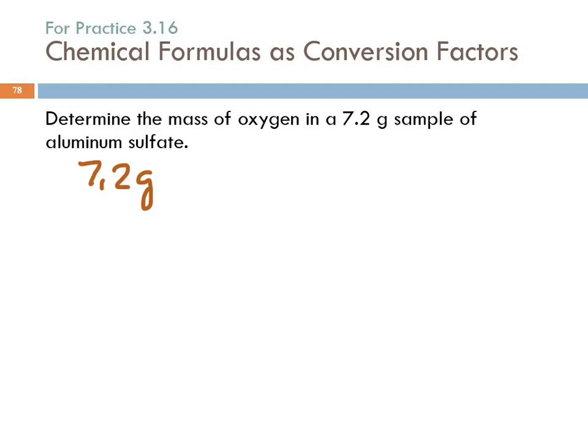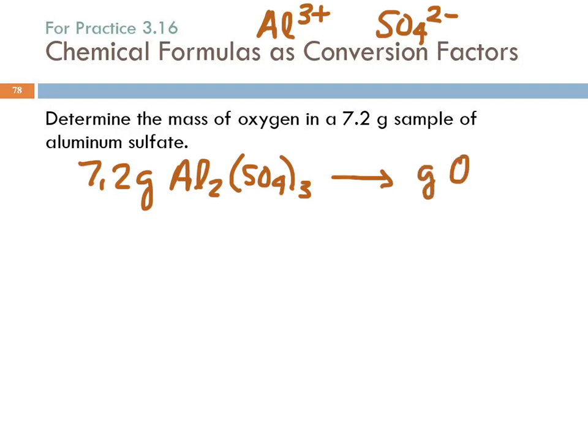What kind of a compound is aluminum sulfate? What kind of an element is aluminum? It's an ionic compound because aluminum is a metal. What charge does aluminum have as an ion? 3+. And what's the formula for sulfate? That's SO4, 2-. So to put these two together, we're going to need two aluminums and three sulfates. So we have 7.2 grams of aluminum sulfate. And we're trying to figure out how many grams of oxygen is in there.